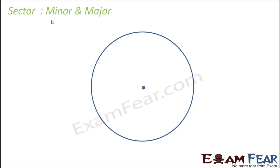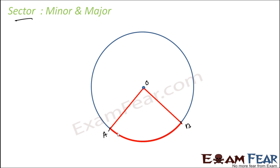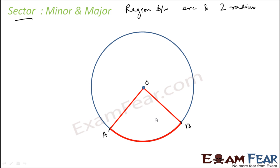Let's understand a new term: sector. Suppose you have an arc with endpoints A and B. Now join both A and B to the center O with straight lines. The region enclosed between the arc and these two radii is called a sector. So a sector is the region between an arc and the two radii joining the center to the endpoints of that arc.